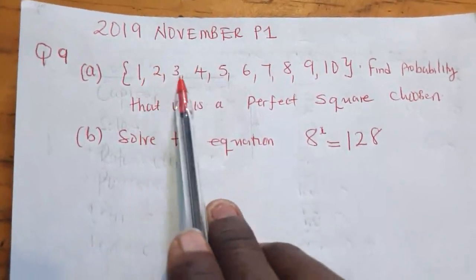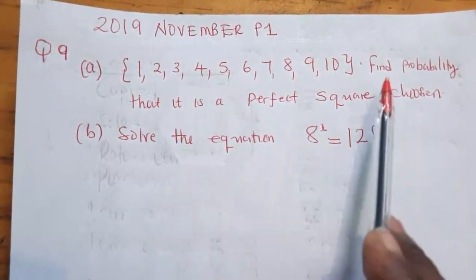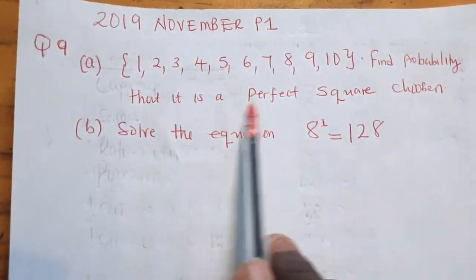Given that 1, 2, 3, 4, 5, 6, up to 10, there are numbers, and a number is chosen at random.